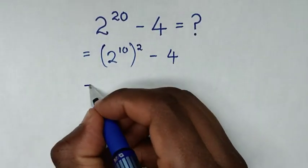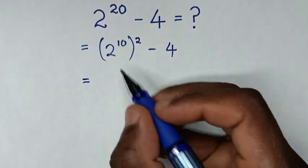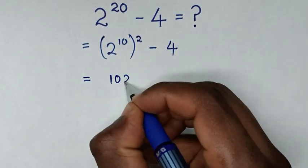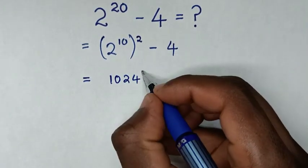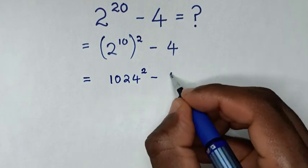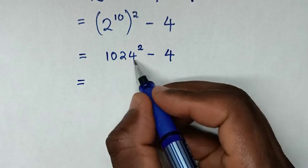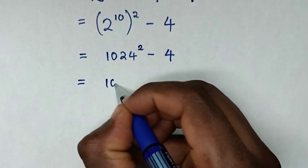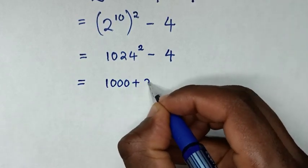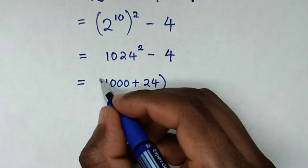Then in the next step, 2^10 equals 1024, so we have 1024^2 - 4. Then 1024 is the same as 1000 + 24, so it becomes (1000 + 24)^2 - 4.